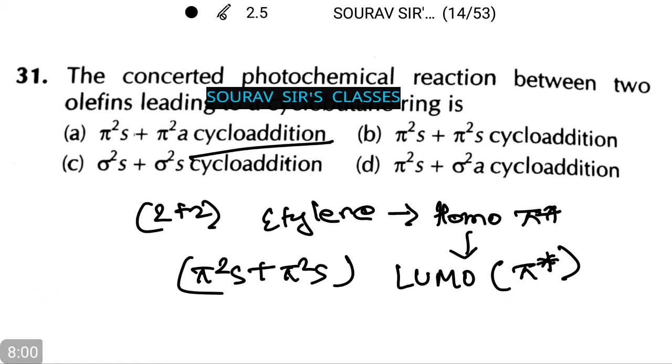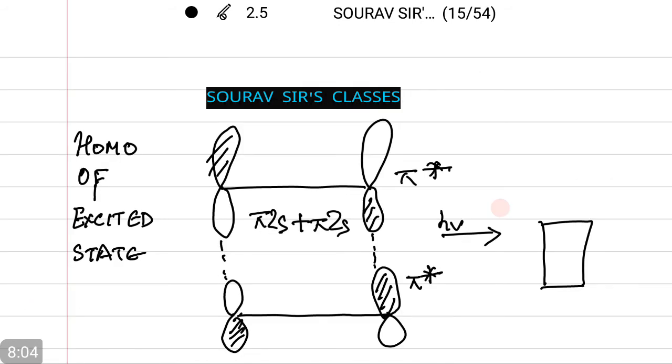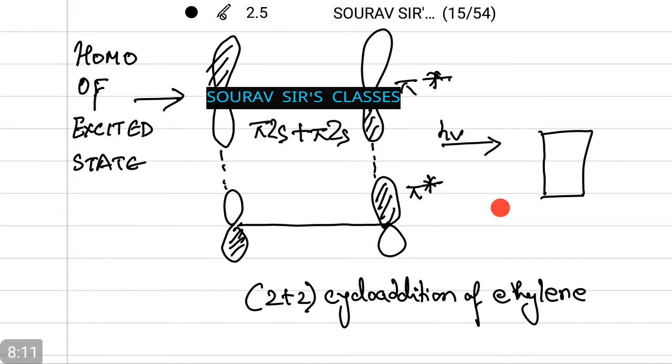Next I will show you how the diagram looks like. Now this is how the diagram will look like. Notice the above diagram is of a HOMO of an excited state, whereas the lowest diagram is of the LUMO of the ground state. This equals to hν equals to a cyclobutane and this whole process is a 2 plus 2 cycloaddition of ethylene.